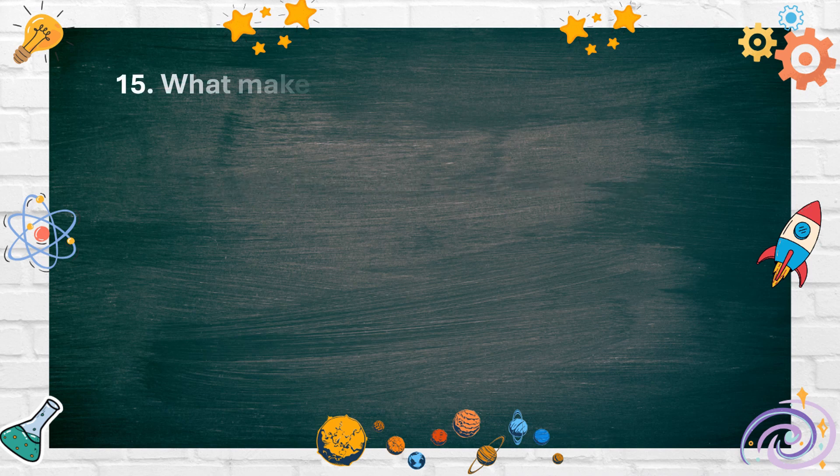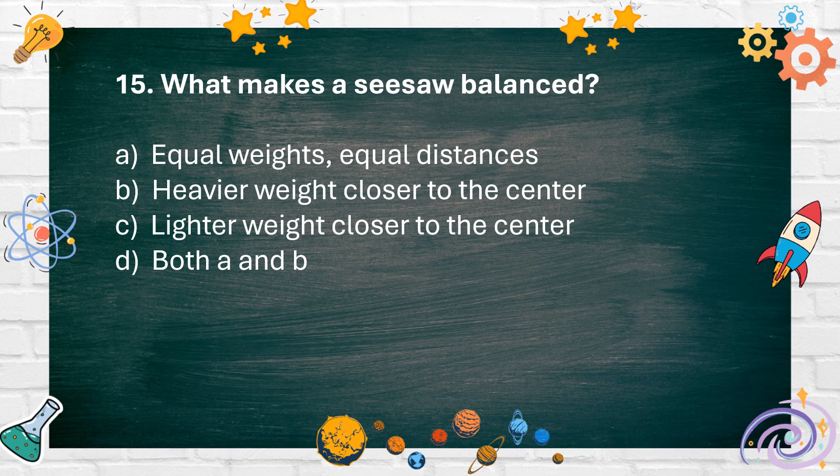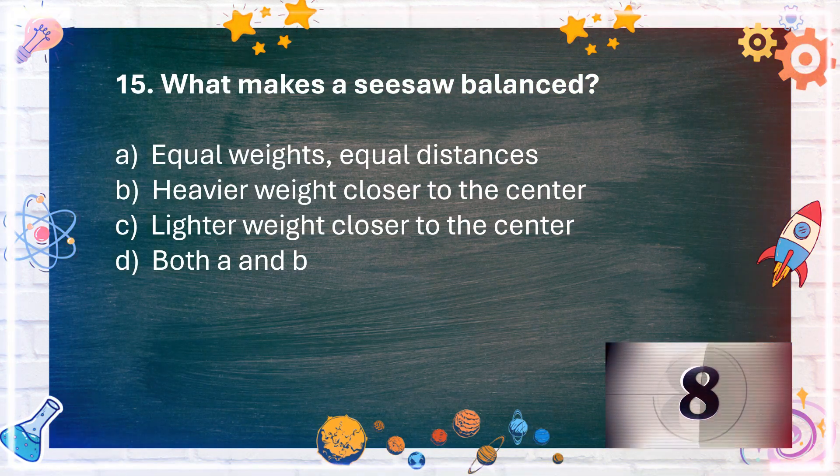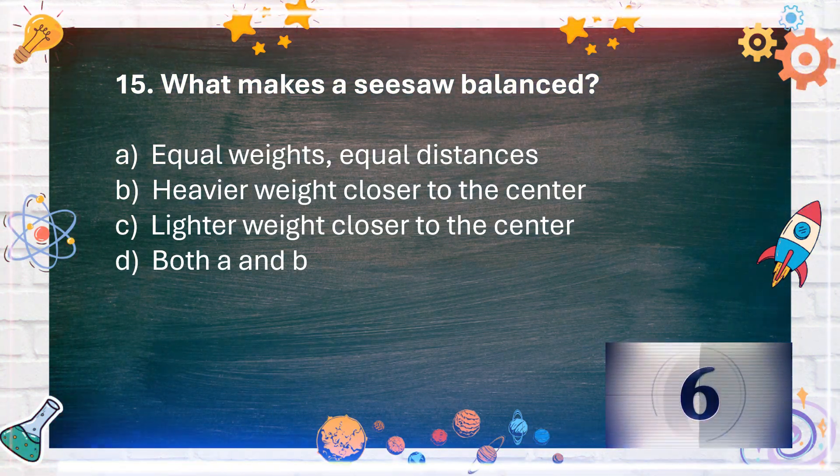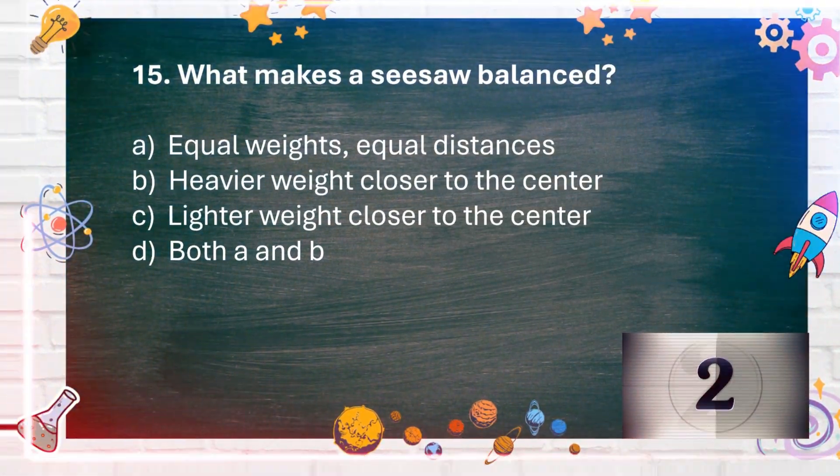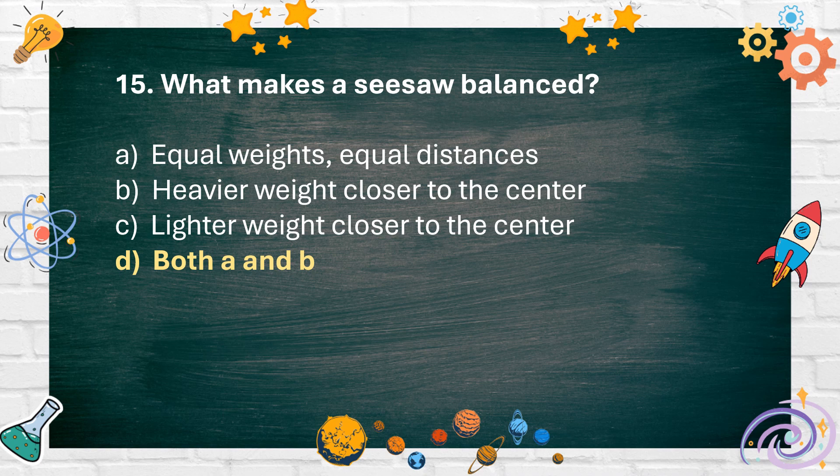Number 15: What makes a seesaw balanced? A. Equal weights, equal distances. B. Heavier weight closer to the center. C. Lighter weight closer to the center. D. Both A and B. The answer is D. Both A and B.